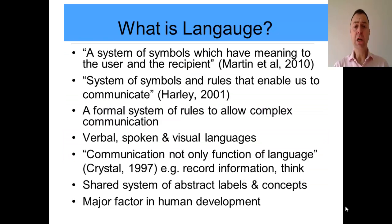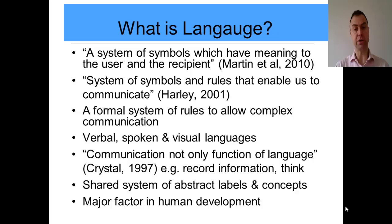There are a number of different definitions of what language is. Martin et al. defined it as a system of symbols which have meaning to the user and the recipient. A similar definition by Harley is that language is a system of symbols and rules that enable us to communicate. Both refer to some form of symbol system. When we hear the word 'symbols', we might think of written symbols or words, but spoken language could also be thought of as symbols.